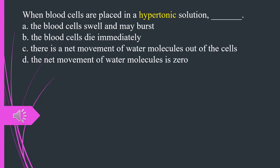When blood cells are placed in a hypertonic solution, A. The blood cells swell and may burst. B. The blood cells die immediately. C. There is a net movement of water molecules out of the cells. D. The net movement of water molecules is zero. The answer is C. There is a net movement of water molecules out of the cells.